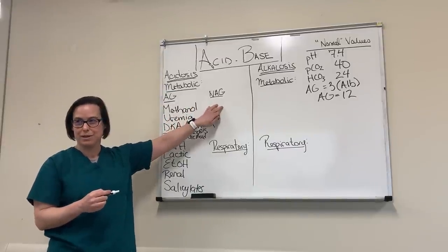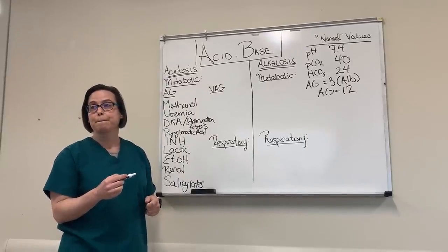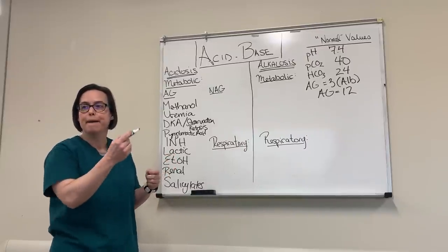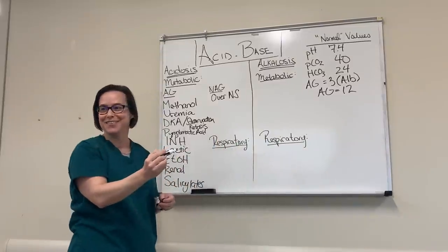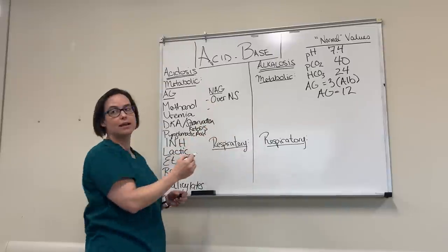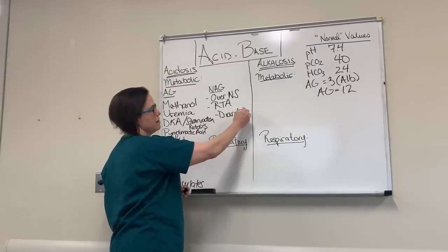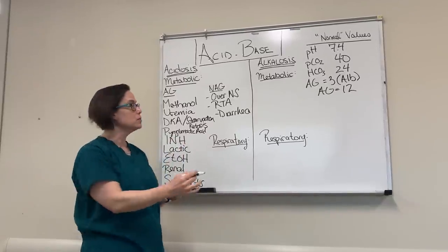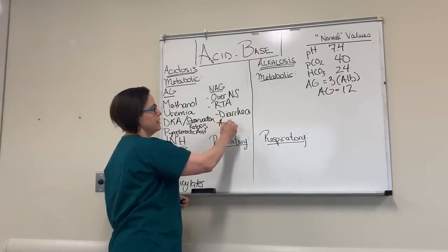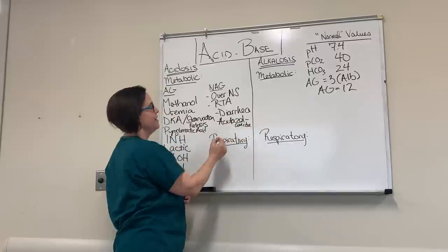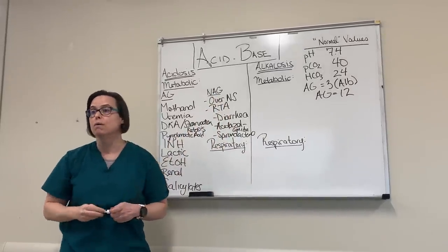How about our non-anion gap metabolic acidoses? More like hyperchloremia. What would cause that — over-resuscitation with normal saline? Renal tubular acidosis. Diarrhea can cause it — if you're losing a lot of your bicarb through your stool. Acetazolamide and spironolactone are some other ones. So: medications, diarrhea, renal tubular acidosis, or a whole lot of normal saline.